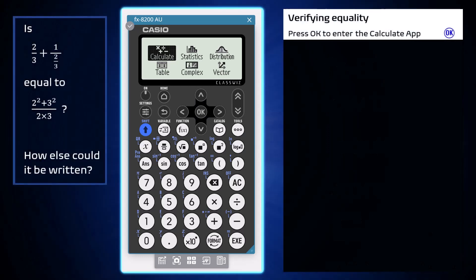The equality or otherwise of numerical expressions can be verified using the Calculate app of Casio FX 8200 AU, opened by pressing execute or OK.